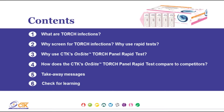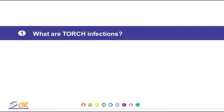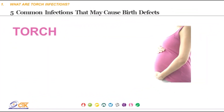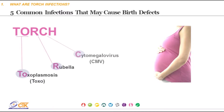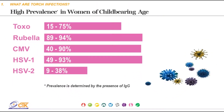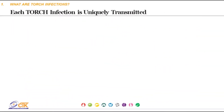First, what are TORCH infections? The acronym TORCH stands for Toxoplasmosis, Rubella, Cytomegalovirus, and Herpes Simplex Virus 1 and 2. They represent five infections that can cause serious symptoms in a pregnant woman and can potentially transmit to the fetus, causing severe congenital infection and major birth defects. In women of childbearing age, TORCH infections are extremely common globally, with prevalence ranging from 9% to 94%.